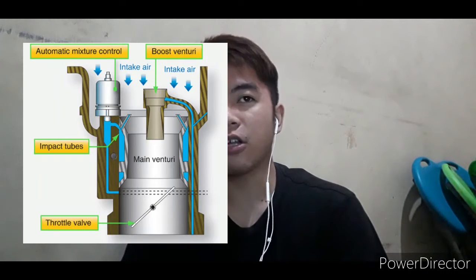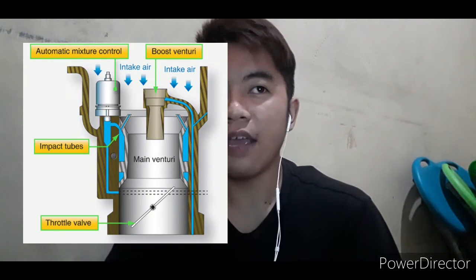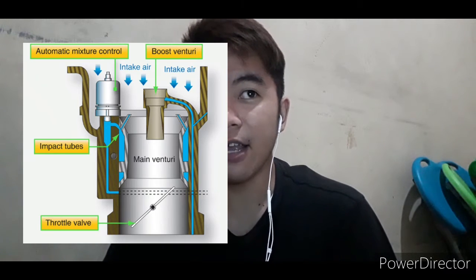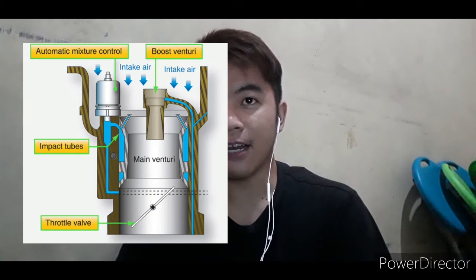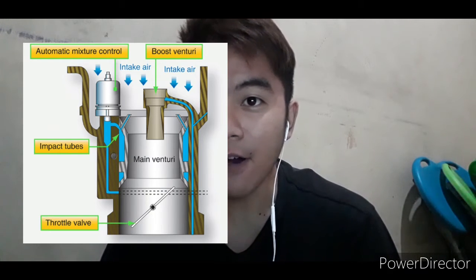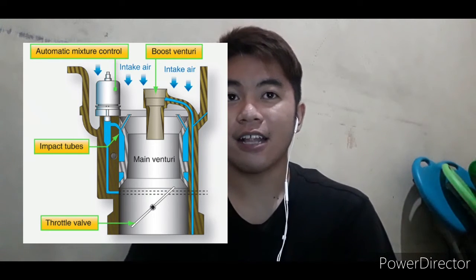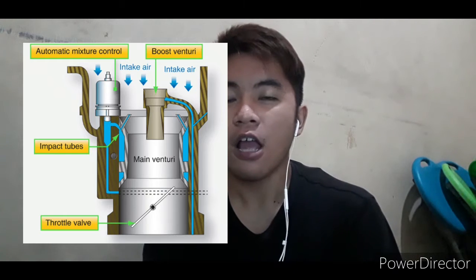The venturi serves only to create pressure differentials for controlling the quantity of fuel to the metering jet in proportion to airflow to the engine. Like a float carburetor, a pressure carburetor has a barrel with a venturi inside it through which air flows on its way to the engine cylinder. However, it does not have a float to control the flow of fuel into the carburetor.